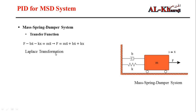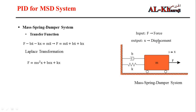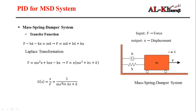Taking the Laplace transformation of this equation gives: F equals M·S² · X + B·S · X + K·X. Our input is the force and the output is X, the displacement. The transfer function represents the relationship between the output and input of the system. So the open-loop transfer function is X over F, equal to 1 over (M·S² + B·S + K). This is the open-loop transfer function of the system.